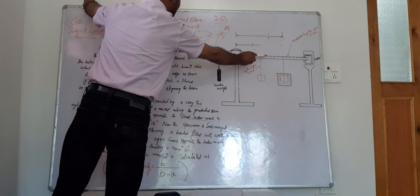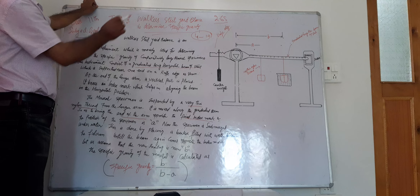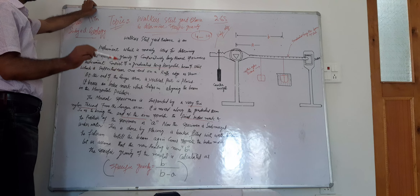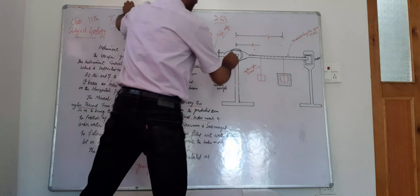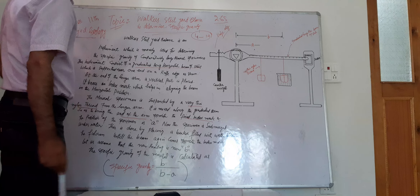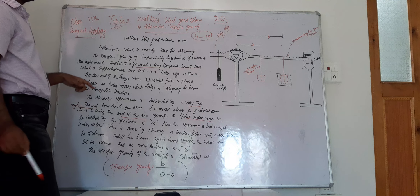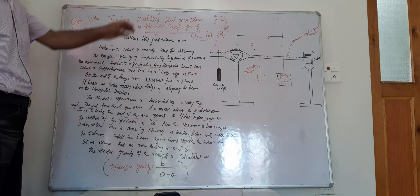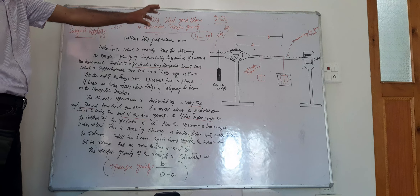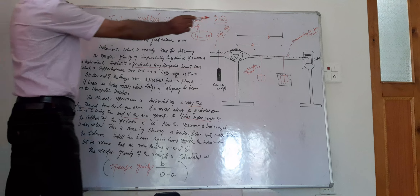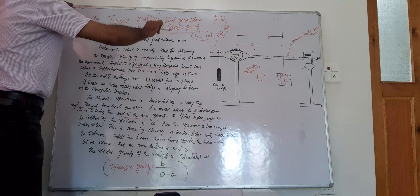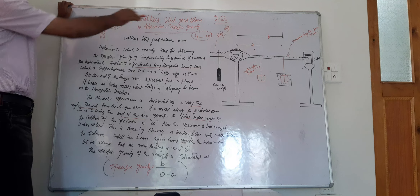This instrument, Walker's Steel Yard Balance, consists of a graduated long horizontal beam of steel, which is supported near one end on a knife edge. At the other end there is a long arm supported by a vertical post placed against the graduated beam. It bears an index mark which helps in aligning the graduated long horizontal beam in a horizontal position.